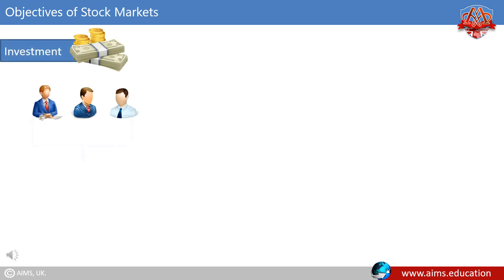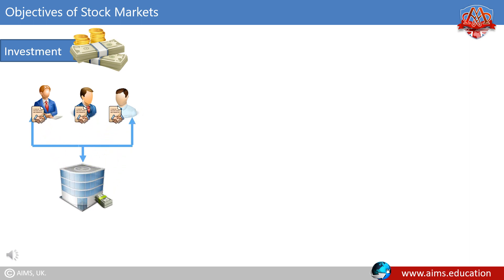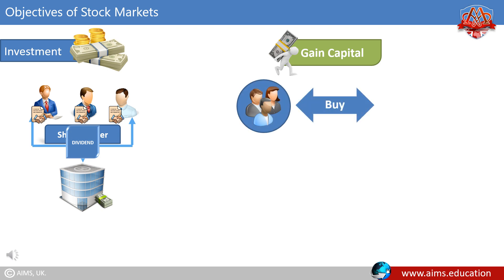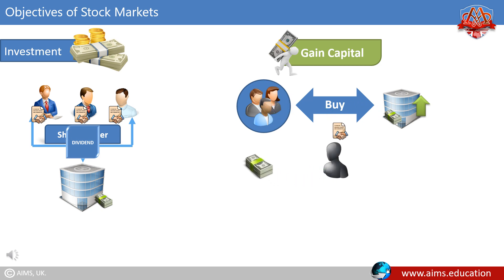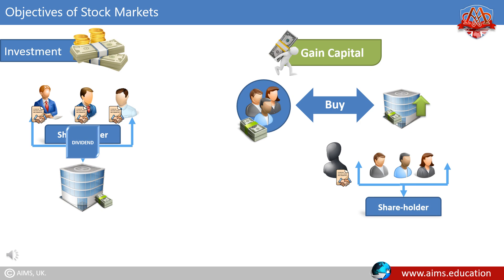Objectives of stock markets. The first objective is investment. Many people purchase company shares for investment purposes, with the main aim of becoming a shareholder and receiving dividends. The second objective is to gain capital. Other people buy shares when they estimate that the share value is likely to increase, and sell them to earn profits once the price has risen. Such investors do not intend to become shareholders, so shares are considered a kind of commodity for trading. Here are some forms of such trading and their permissibility in Sharia.